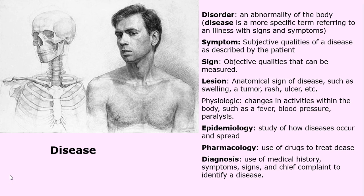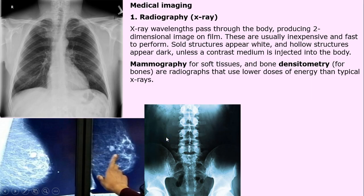Epidemiology is the study of how diseases occur and spread, and people spend much of their adult life as epidemiologists hunting down diseases. Pharmacology is the use of drugs to treat and manage disease. Diagnosis uses many forms of information — the patient's medical history, symptoms, signs, and chief complaint (why did they come in, what's bothering them the most) — to devise a diagnosis.